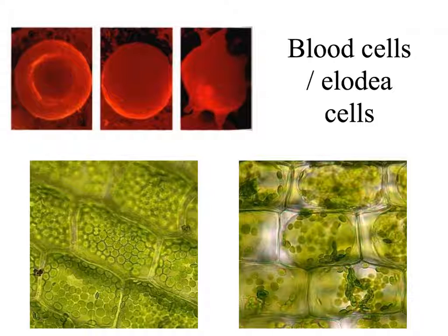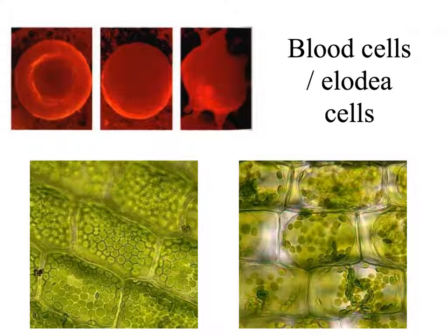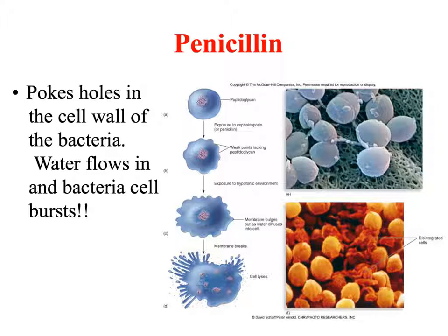One cell bursting may not always be adverse, depending on location. Plant cells have cell walls that help regulate water and prevent too much loss. Plants actually like being swollen — turgid. When they lose water, the cell membrane pulls away from the cell wall and the plant wilts and can die if it doesn't get water soon.